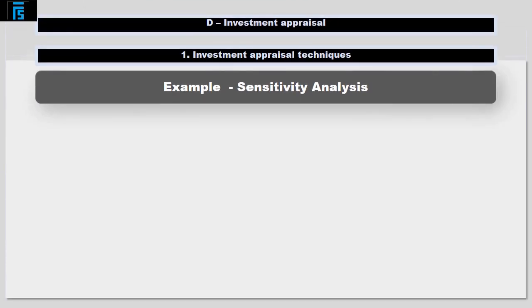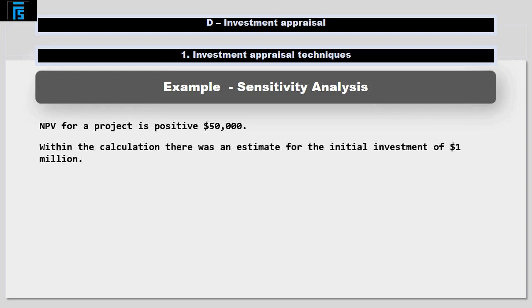For example, let's suppose we have calculated the NPV for a project to be positive $50,000. Within the calculation there was an estimate for the initial investment of $1 million. Our initial conclusion would be to go ahead with the project given it has a positive NPV.